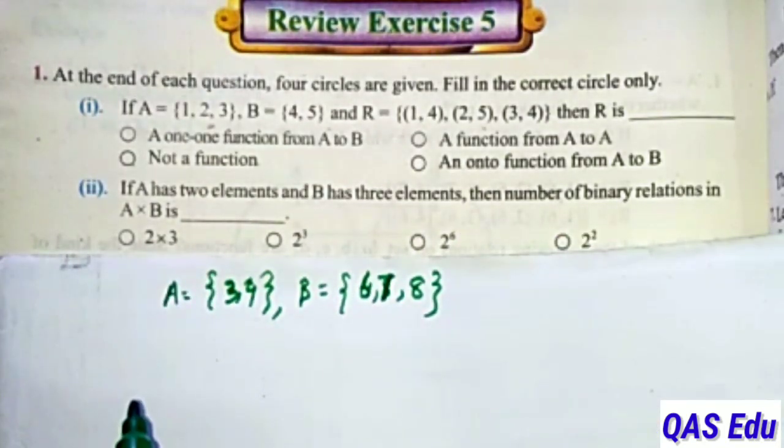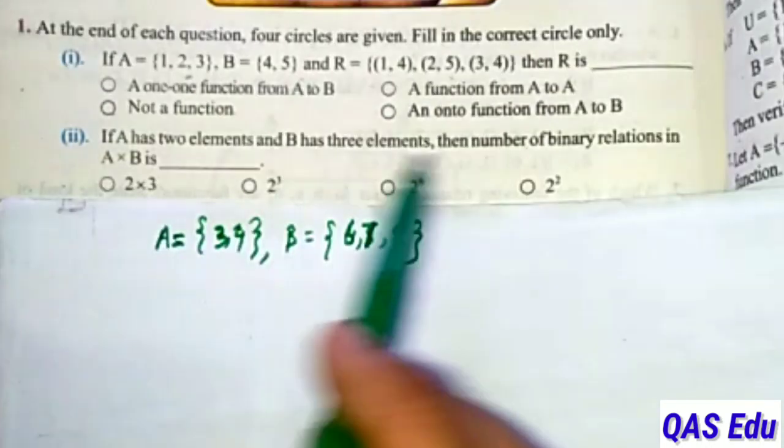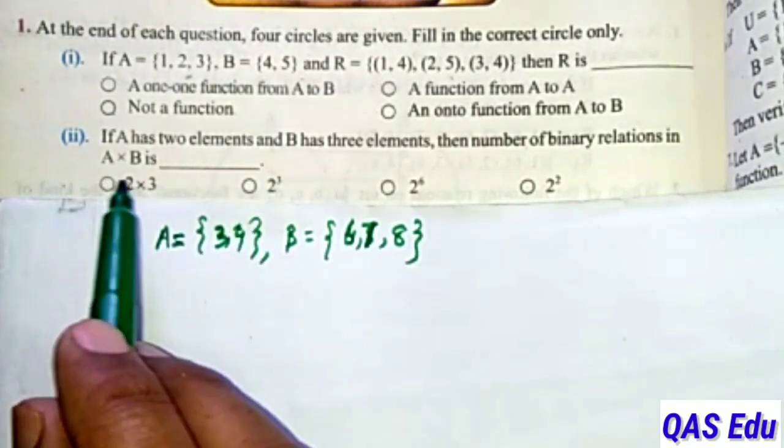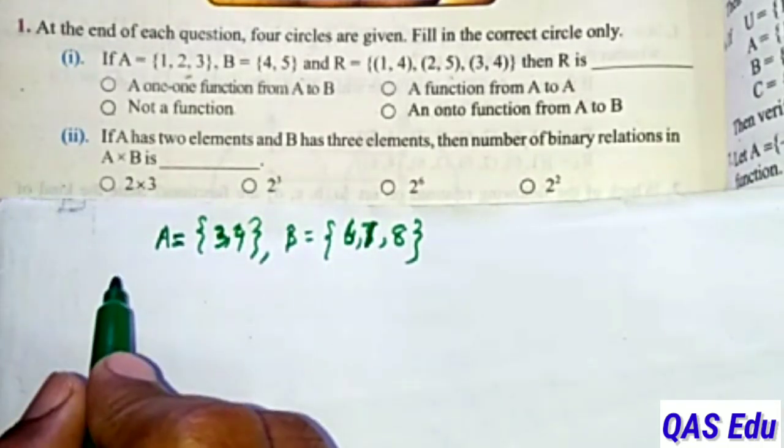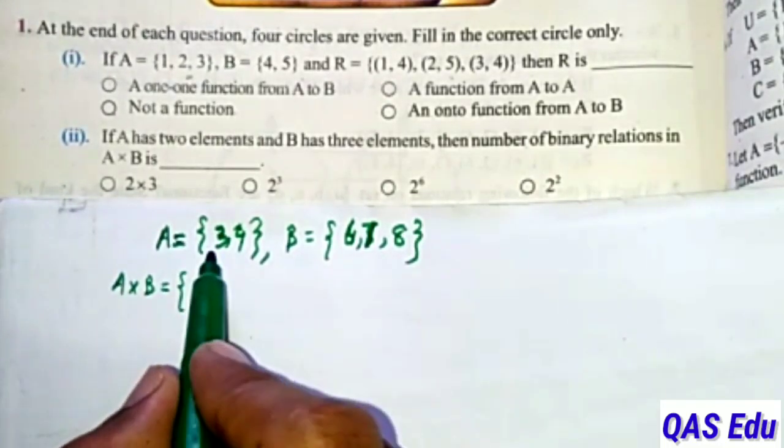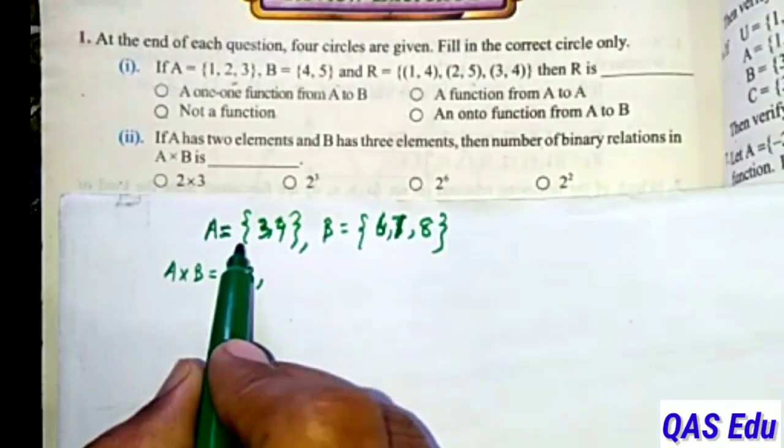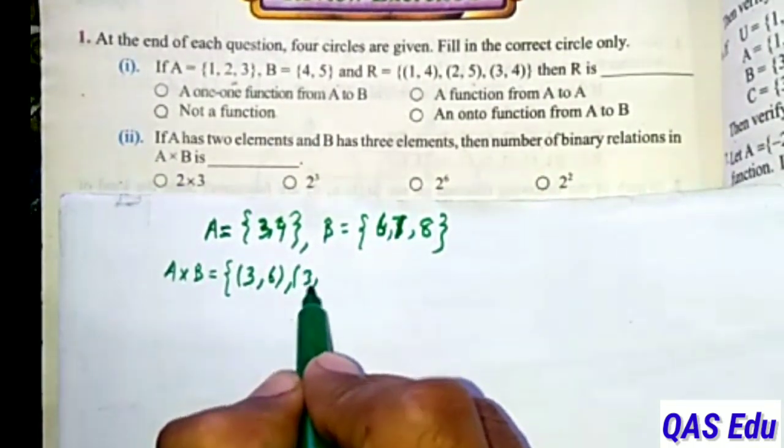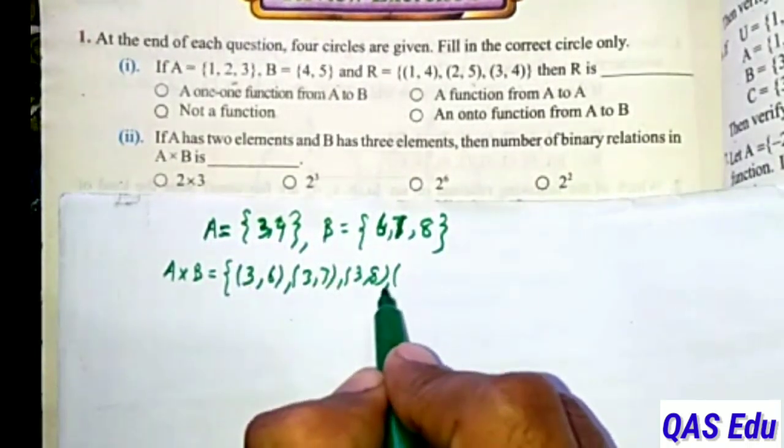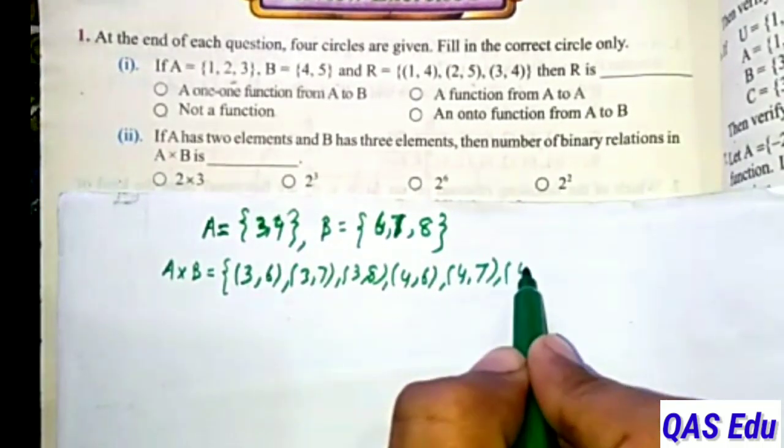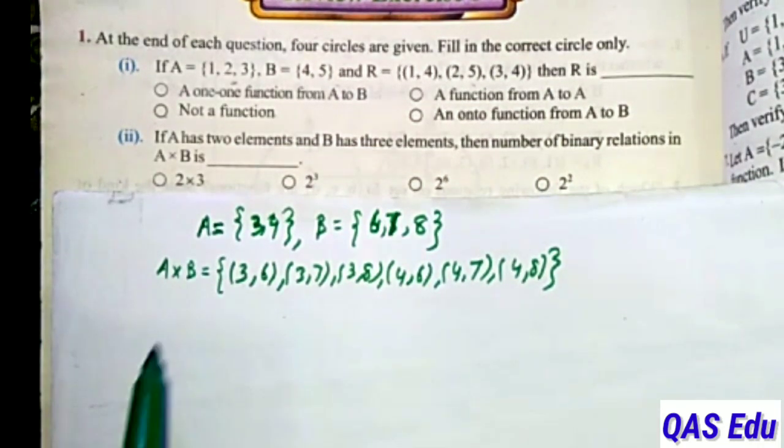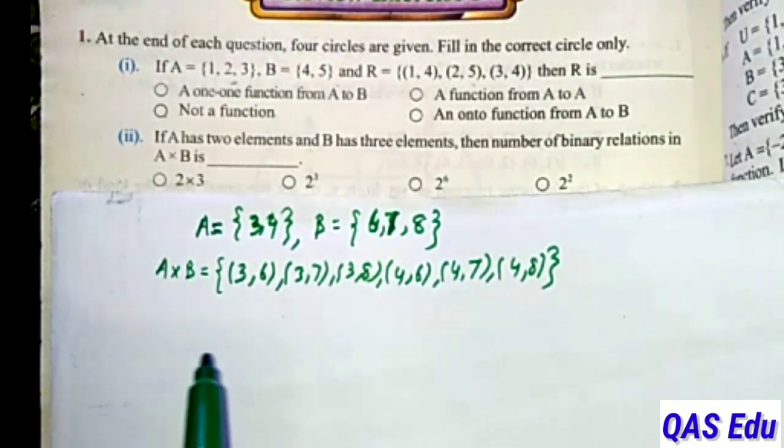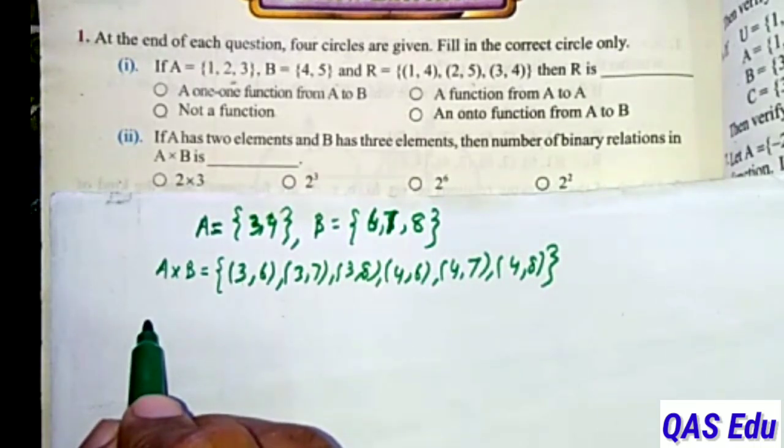Number of binary relations in A cross B. Binary relation is any subset of A cross B. First find A cross B. A cross B: each element of A pairs with each of B: (3,6), (3,7), (3,8), (4,6), (4,7), (4,8). This subset has how many elements? 1, 2, 3, 4, 5, 6 elements.